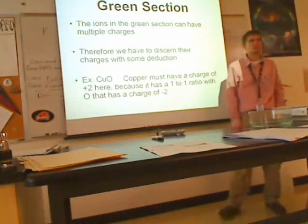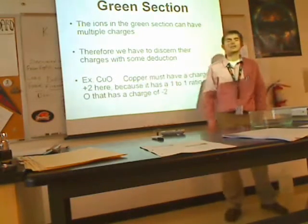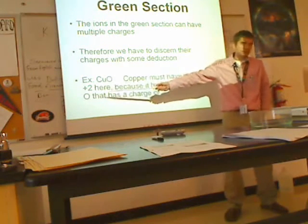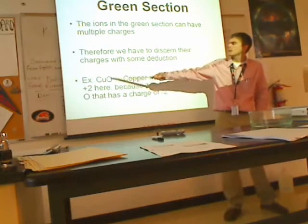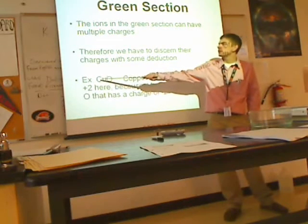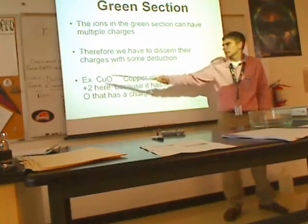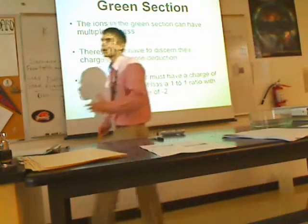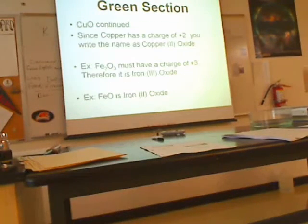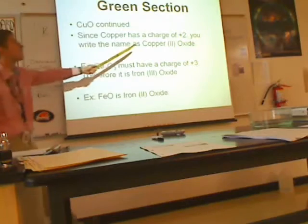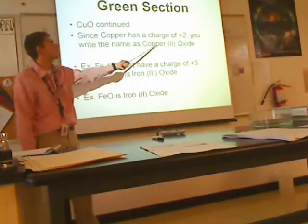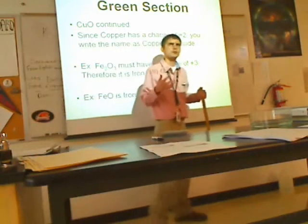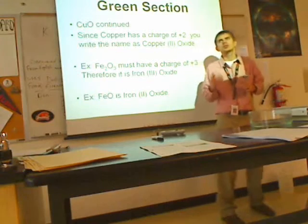So take CuO. Oxygen has a charge of negative 2, always and forever. Copper doesn't necessarily, so you've got to figure out its charge. If O has a negative 2, that means copper has to have a positive 2 because they have to balance each other out. So in this instance, copper has a positive 2 charge. Since copper has a positive 2 charge, you would name this copper(II) oxide. In Roman numerals, after the metal, you write the charge of the metal.